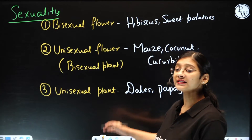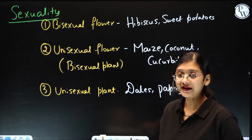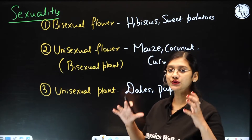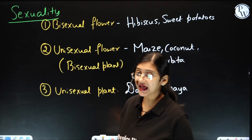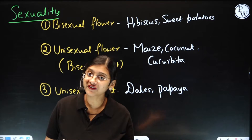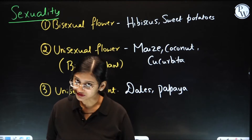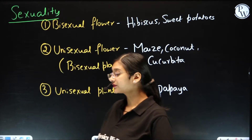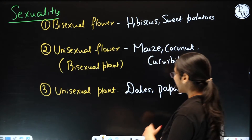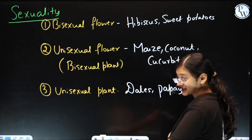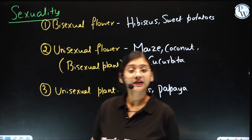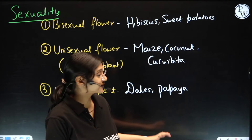And the last is the unisexual plant, which will have either male or female flowers. So some of the examples can be dates and papaya.